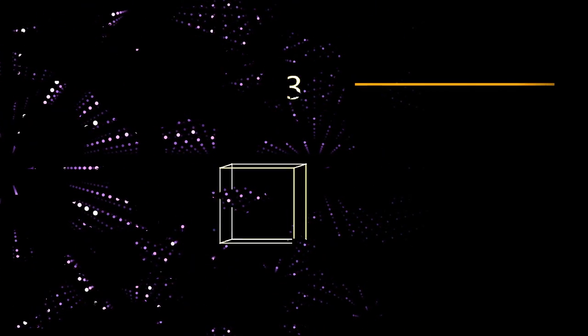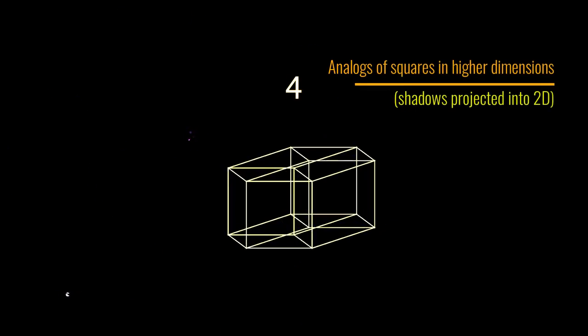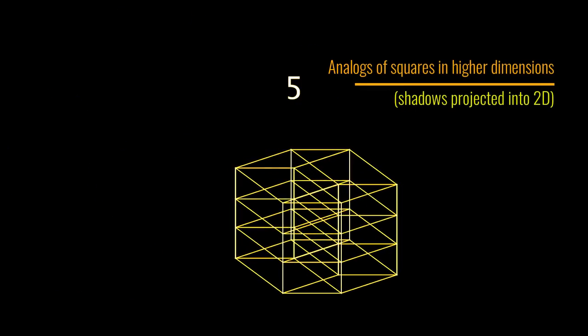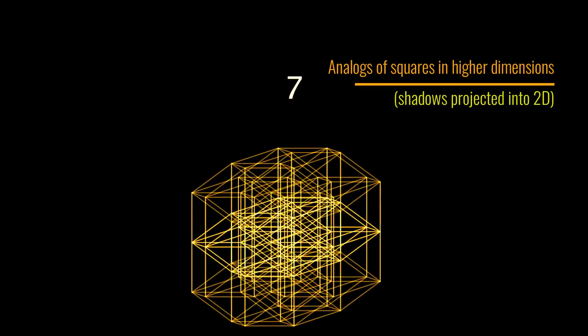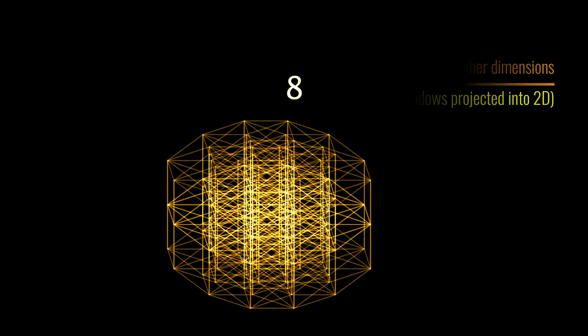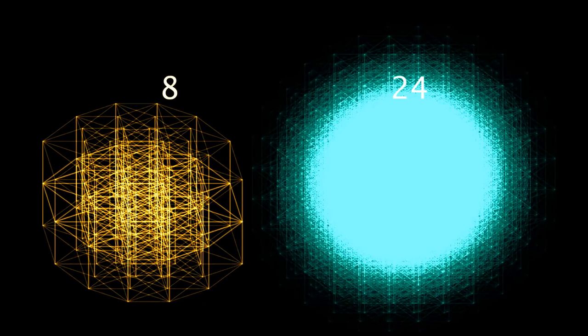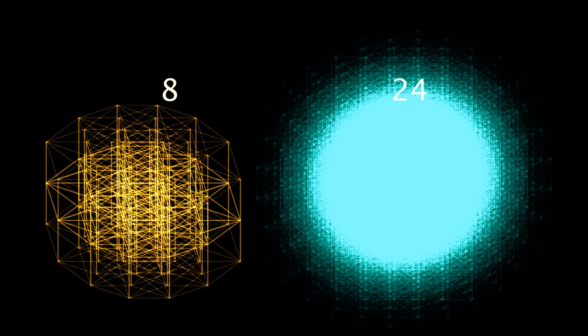It turns out that lattices are very special in eight and 24 dimensions, which is very weird. In fact, this wasn't really noticed until relatively recently. I mean, people spent 100 or 200 years studying lattices without noticing that these two dimensions are very special.